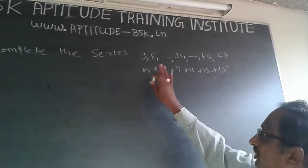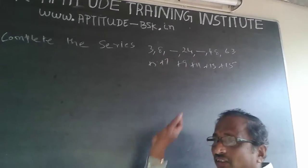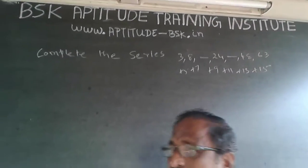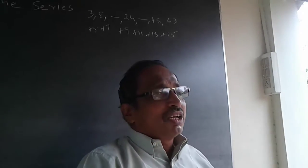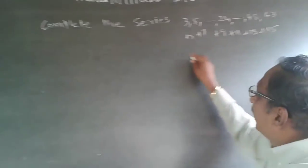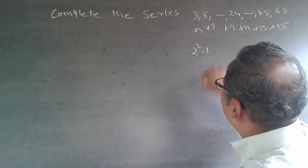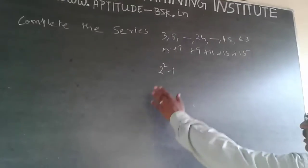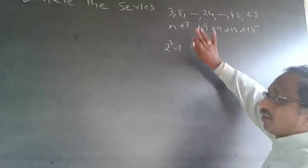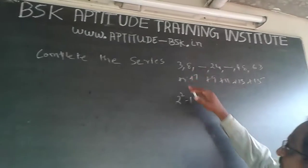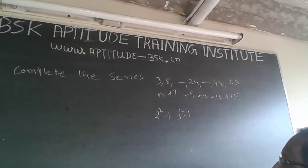Another way of finding it out: 3 is nothing but 2 square minus 1. These are all patterns you have to find out - sometimes number series is easy, sometimes difficult. 8 is 3 square minus 1.